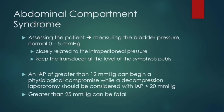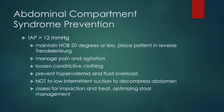An IAP greater than 20 can be fatal, as this is abdominal compartment syndrome. To prevent ACS or reduce intra-abdominal pressures: maintain the head of bed at 20 degrees or less, sometimes placing the patient in reverse Trendelenburg; manage pain and agitation; loosen all constrictive clothing; prevent fluid overload; place an NG tube to low intermittent suction to decompress the abdomen; and assess and treat for impaction while optimizing stool management.